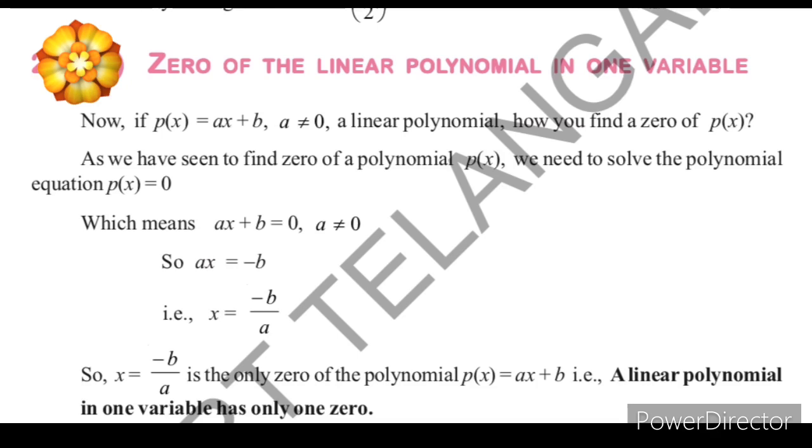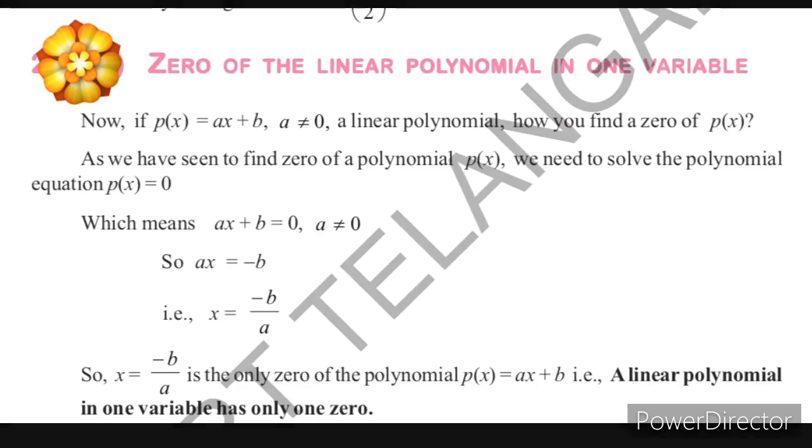The formula is x equals to minus b by a is the only zero of the polynomial. The general form is ax plus b. That is, a linear polynomial in one variable has only one zero. Clear?